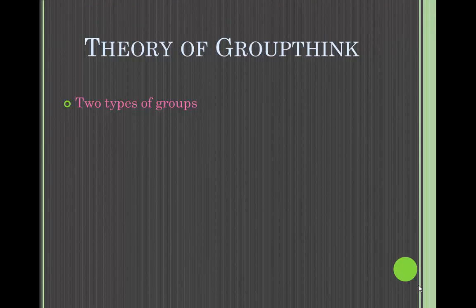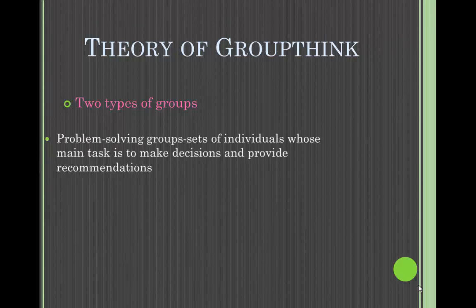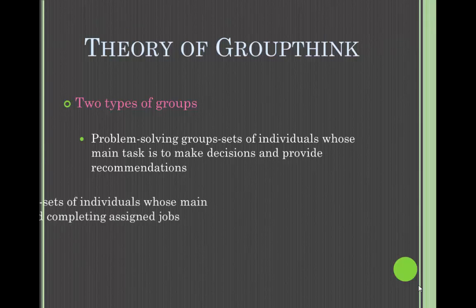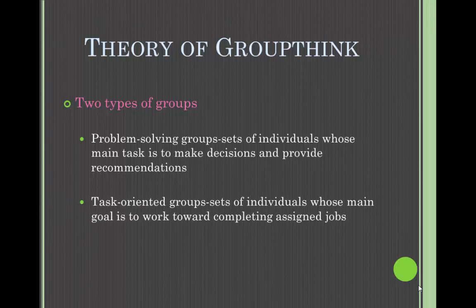So the theory of groupthink. There are two types of groups within groupthink. The first is problem-solving groups — sets of individuals whose main task is to maintain decisions and provide recommendations. The second is task-oriented groups — sets of individuals whose main goal is to work towards completing assigned tasks.